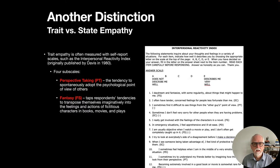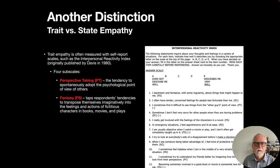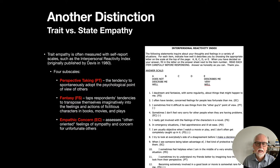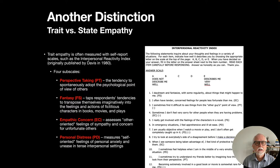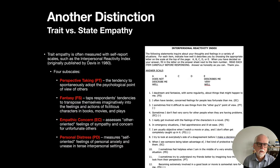Another subscale is fantasy, which taps respondents' tendencies to transpose themselves imaginatively into the feelings and actions of fictitious characters — are you the kind of person who gets absorbed in movies and books with fictional characters? Then we have empathic concern, which combines perspective taking and affective sharing: other-oriented feelings of sympathy and concern for unfortunate others. Finally, there's personal distress, which measures self-oriented feelings of personal anxiety and unease in intense interpersonal settings. Based on these scales you get an idea of individual differences in empathy.